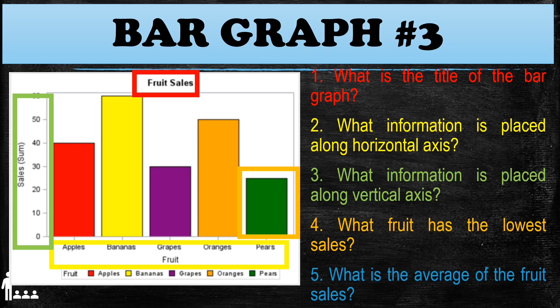Before going to question five, let's also note what fruit has the highest sales. It is the banana, with 60 sales. Now for question five, what is the average of the fruit sales? To get the average, add all the fruit sales and divide by five. The average for the fruit sales is 41. I hope you learned something from this lesson — thank you!